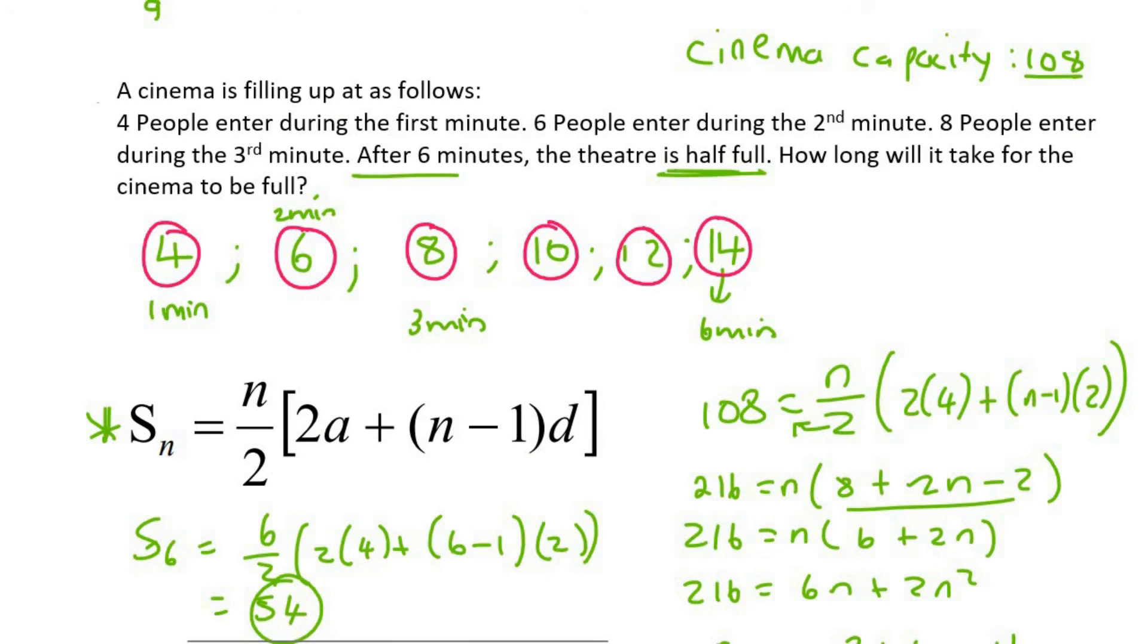Well, guys, as you can see, the people are filling up into the cinema faster and faster. In the first minute, four people walked in. In the second minute, six people went in, so now there's 10 people already. Then in the third minute, eight people walked in. So there are more people walking in as the minutes go by.